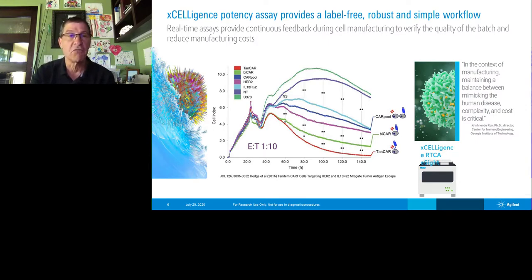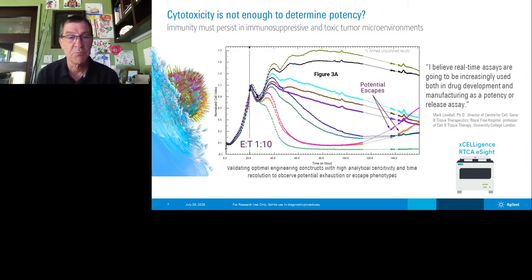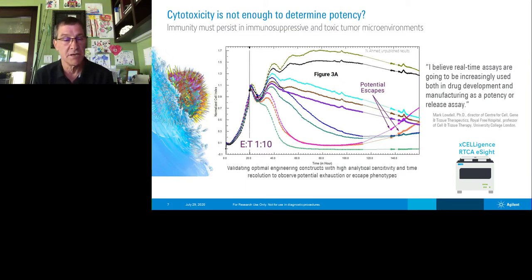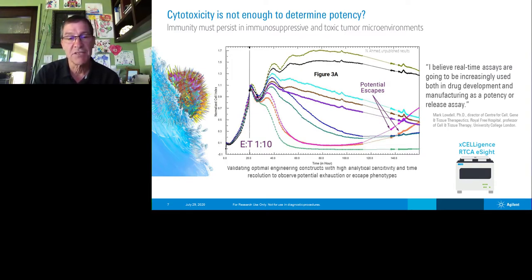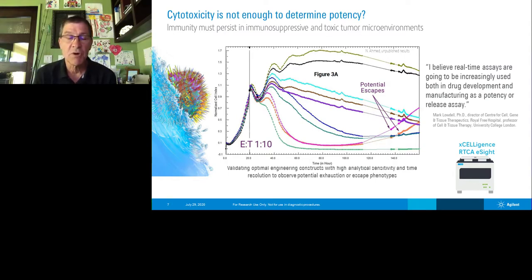What's very equally informative is unpublished data done several months previous to the published work, where Nabil Ahmed's group was testing various strategies — different co-receptors and tweaks to the construct to enhance immunoactivity in these CAR T cells. Two constructs at a very low ratio of one-to-ten were very effective in the early days, but around day three or four, the tumor starts to grow back. These are very key events that we often miss in other types of assays. One of the great challenges of immunotherapy is not just getting immune cells to effectively address the pathogenic process, but to actually persist.